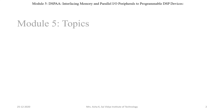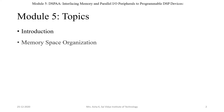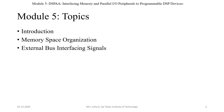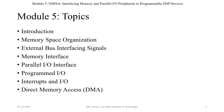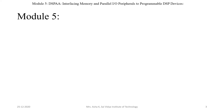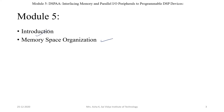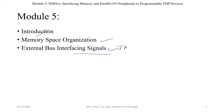Let us discuss Module 5 topics. Module 5 consists of introduction, memory space organization, external bus interfacing signals, memory interface concept, parallel input-output interface with the DSP processor, programmed input-output, interrupts input-output, and dynamic memory access. We will discuss these one by one in a series of videos. In this particular video, we are going to discuss the first concepts: introduction, memory space organization, and external bus interfacing signals used in the DSP processor TMS320C54XX family.